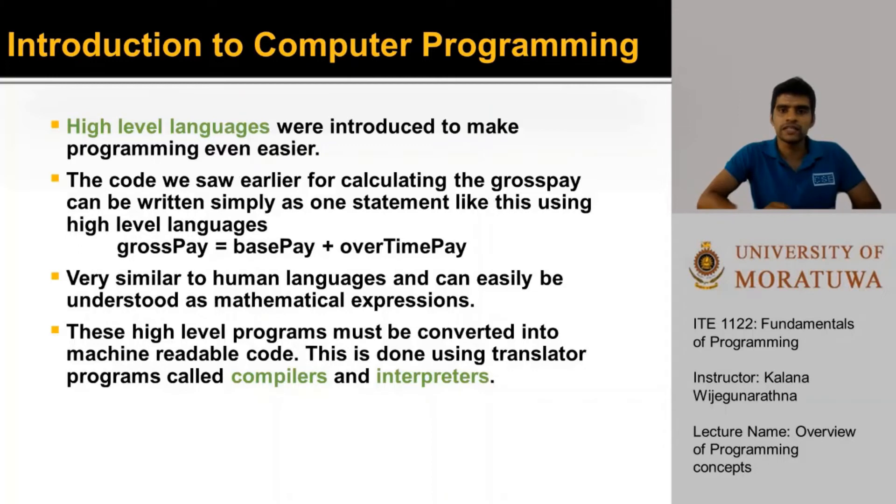High-level languages were then introduced to make programming even easier. The code we saw earlier for calculating the gross pay can be written simply as one statement, like this, using a high-level programming language. As you can see, it's very intuitive for us humans to understand this. It's very similar to human languages and can easily be understood as mathematical expressions. These high-level programs must be converted into machine-readable code for machines to understand them. This is done using translators called compilers and interpreters.